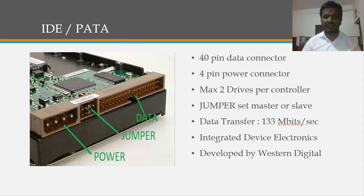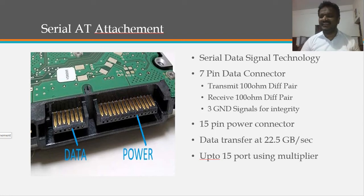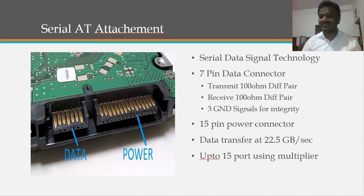The next interface is SATA — Serial AT Attachment. SATA hard disks use serial data signal technology. One might expect a serial interface to be slower than a parallel interface, as we may have studied, so how is SATA performing faster than PATA?